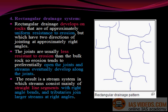Rectangular drainage system: Rectangular drainage develops on rocks that are of approximately uniform resistance to erosion, but which have two directions of jointing at approximately right angles. The joints are usually less resistant to erosion than the bulk rock, so erosion tends to preferentially open the joints and streams eventually develop along them. The result is a stream system in which streams consist mainly of straight-line segments with right-angle bends, and tributaries join larger streams at right angles.